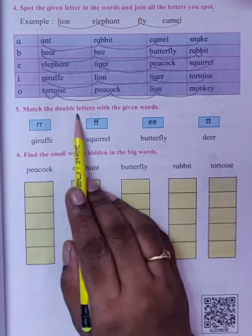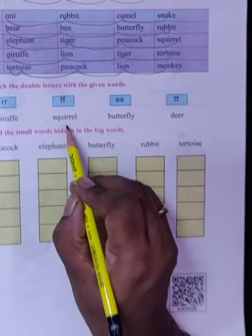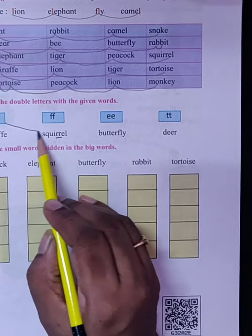Next, match the double letters with the given words. So double R, double R is found in Squirrel. Here there is double R, so we will match R with Squirrel.